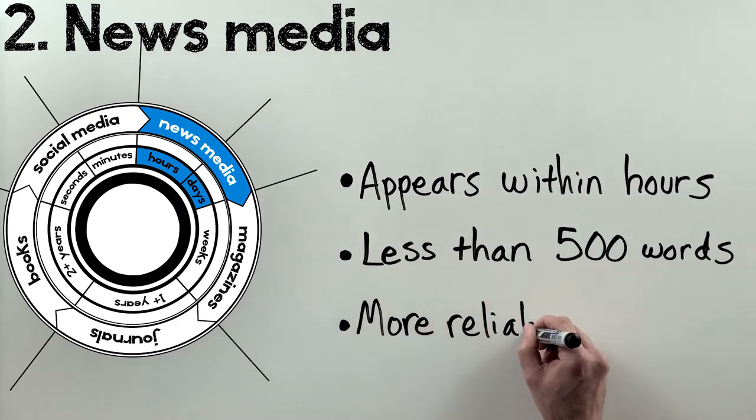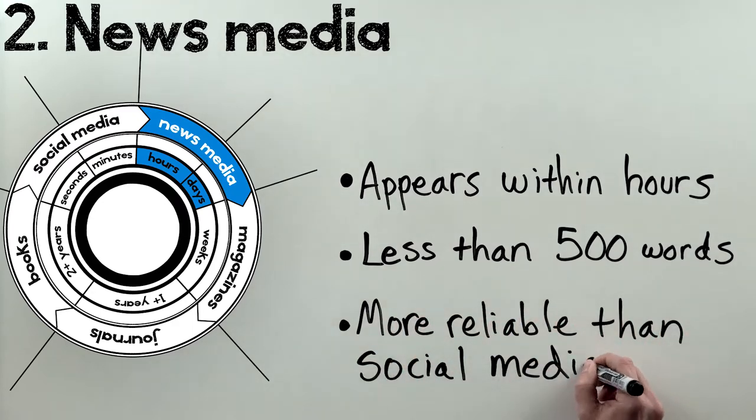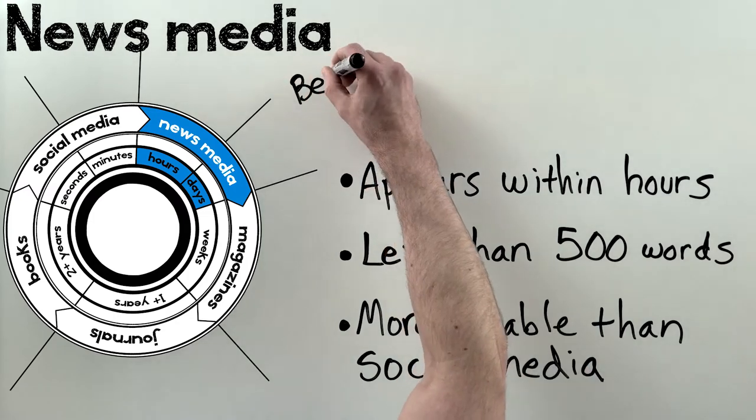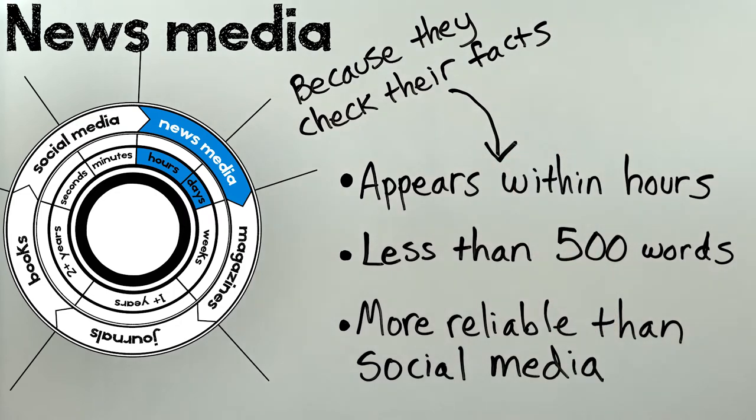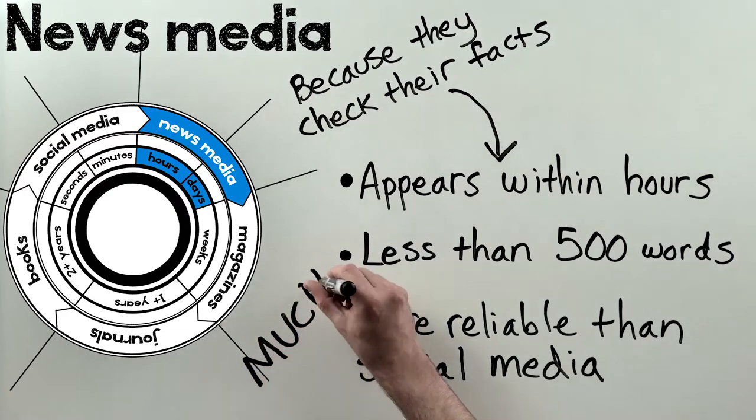News organizations are generally held accountable for the accuracy of their reports, so they check their facts. As a result, it takes the news an hour or more to catch up after something gets big on social media. News isn't produced as ridiculously fast as social media, but it's still fast and way more reliable.